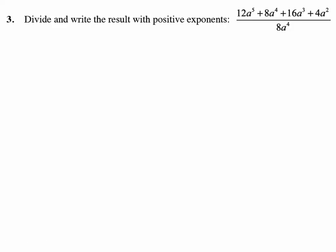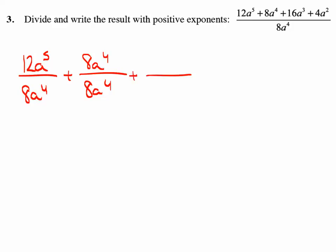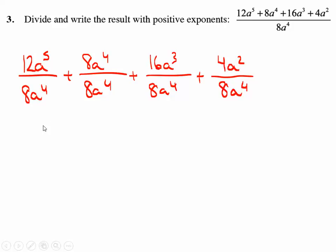This whole concept of positive exponents — let's see what that all means. 8a to the 4th goes underneath each of the terms. Going over here, 8 doesn't go into 12 evenly, but I can reduce by 4 — so how about 3 over 2? 4 goes into 12 three times, 4 goes into 8 twice. a to the 5th divided by a to the 4th gives just an a — I'll leave it on top. 8 divided by 8 cancels, and 8 to the 4th also cancels. Everything's gone — we do have to leave a 1 here.